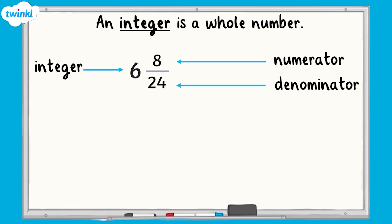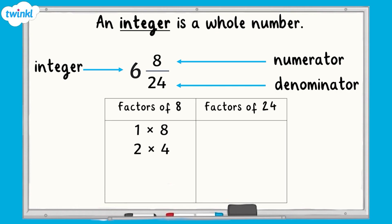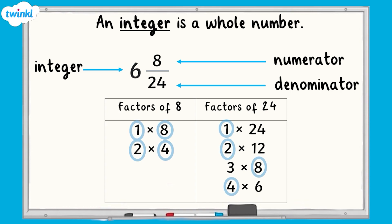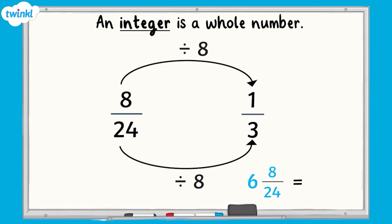Let's take a look at how we might simplify a mixed number. It's important to remember when we simplify a mixed number that the integer does not change — an integer is a whole number. So if we had the mixed number 6 and eight twenty-fourths, we would leave the integer as it is and find the factors of both 8 and 24. The factors of 8 are 1, 2, 4 and 8, and the factors of 24 are 1, 2, 3, 4, 6, 8, 12 and 24. The common factors are 1, 2, 4 and 8. Therefore, the highest common factor of 8 and 24 is 8. The next step is to divide the numerator and the denominator by 8: 8 divided by 8 equals 1 and 24 divided by 8 is 3. Remember, we leave the integer alone. So 6 and eight twenty-fourths in its simplest form would be 6 and one third.